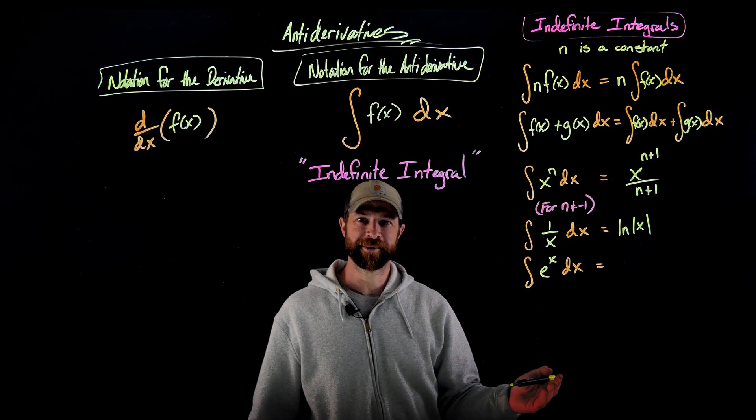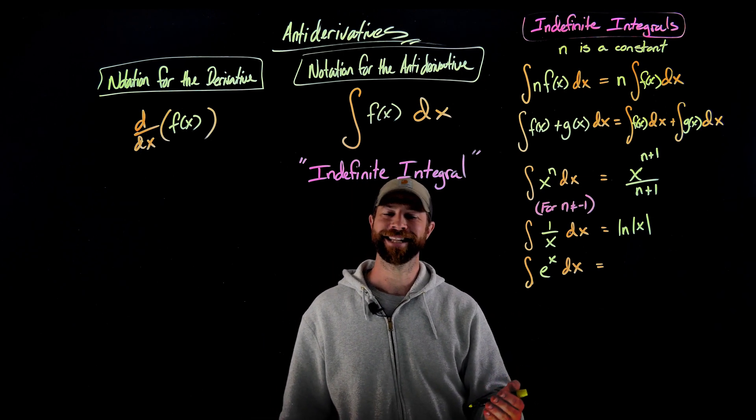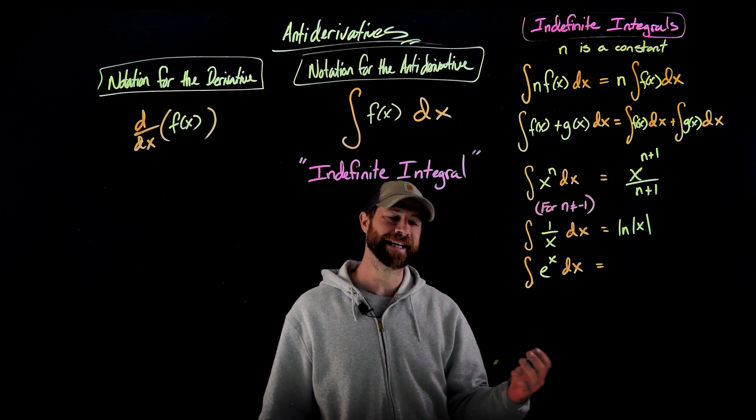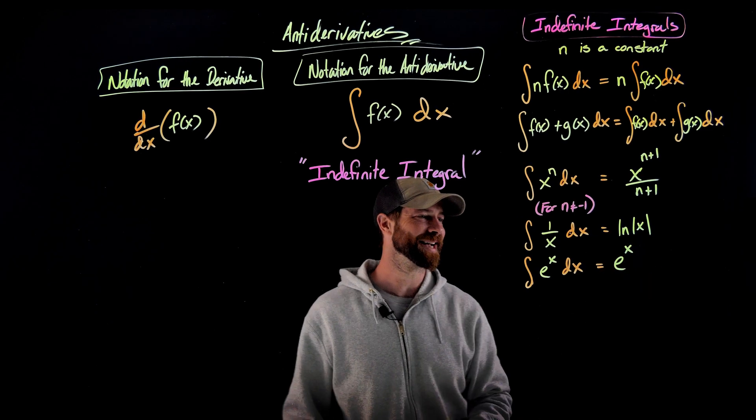The next indefinite integral is the most obvious, e to the x. We know when we differentiate e to the x, we get e to the x. When we integrate e to the x for the same reason, we just get out e to the x.